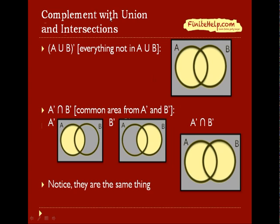Here we're going to talk about complement with unions and intersection. First, we're going to do A union B complement, which is everything that's not in A union B. As you learned, the area here is A union B. So everything that's not in A union B would be this shaded area outside here.